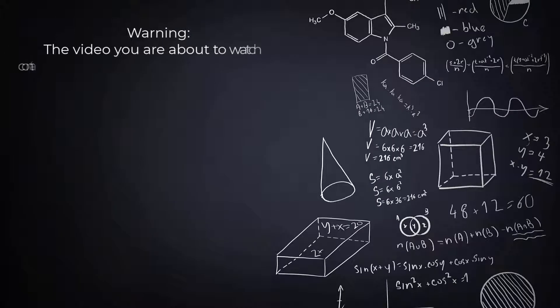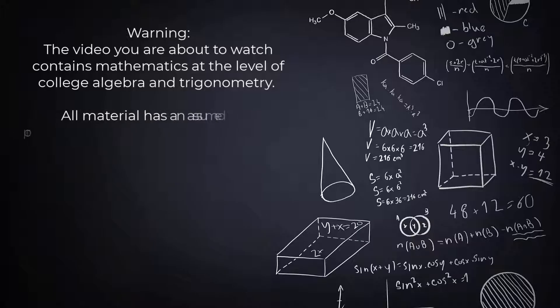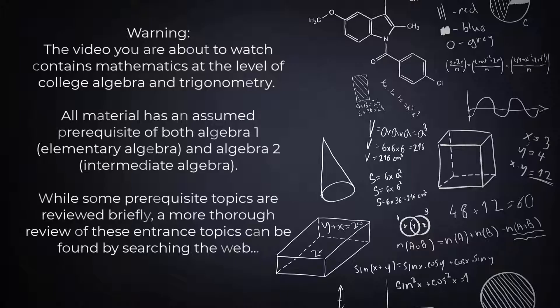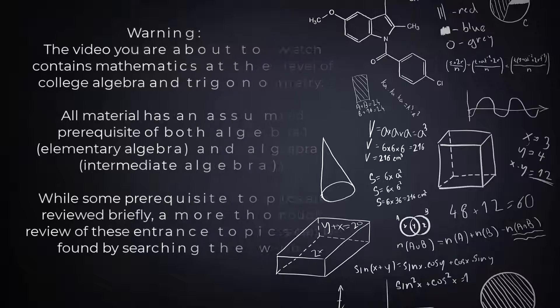Warning! The video you're about to watch contains mathematics at the level of college algebra and trigonometry. All material has an assumed prerequisite of both Algebra 1, which is Elementary Algebra, and Algebra 2, which is Intermediate Algebra. While some prerequisite topics are reviewed briefly, a more thorough review of these entrance topics can be found by searching the web.